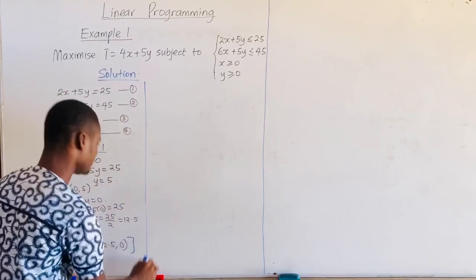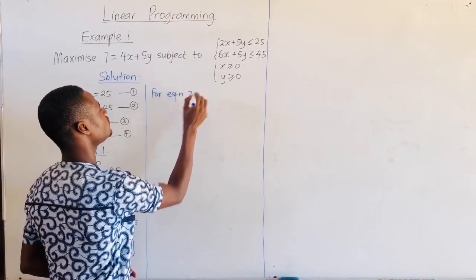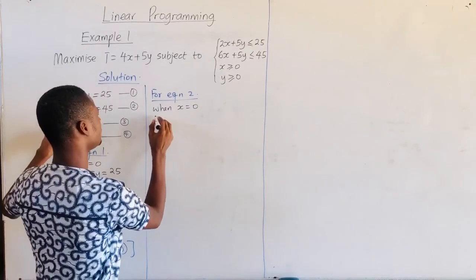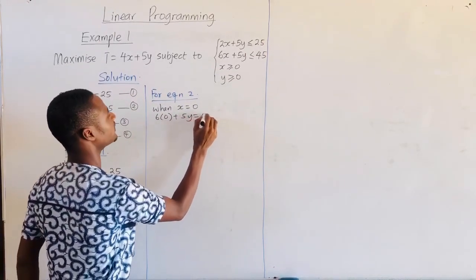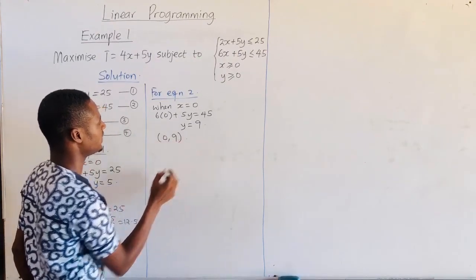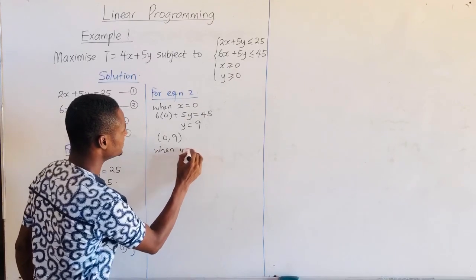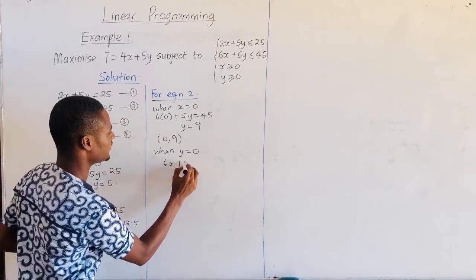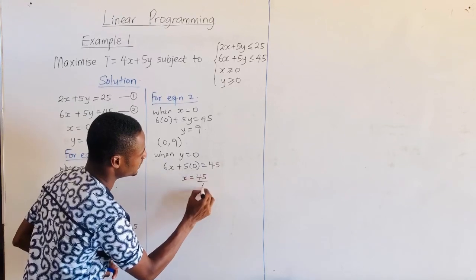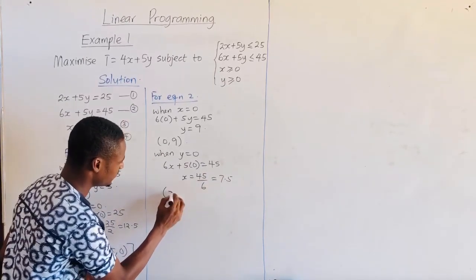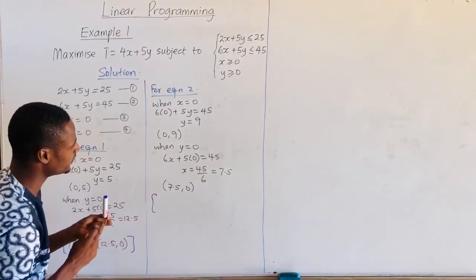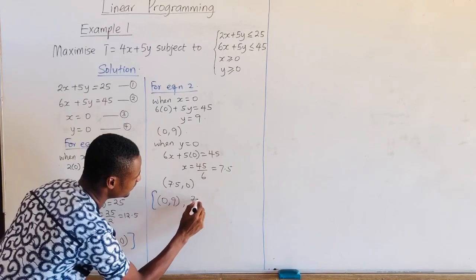Let's go to equation 2. When x is equal to 0, we will have 6 times 0 plus 5y equal to 45, and that will give us y is equal to 9. So we have our first point, (0, 9). Then, when y is equal to 0, we will have 6x plus 5 times 0 is equal to 45. This gives us x is equal to 45 over 6, which is 7.5. So for equation 2, we have two points: (0, 9) and (7.5, 0).